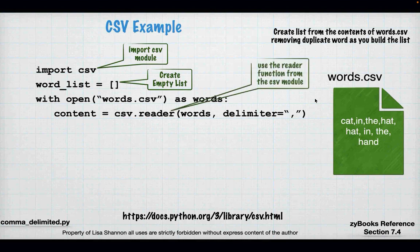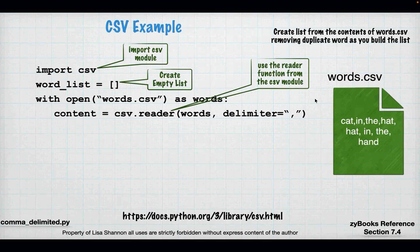And then I've got my with open. So I'm going to open my words.csv file as words. And then I'm going to say content equals csv.reader(words, delimiter=comma). Content is just a variable — I know it's a variable because it's on the left-hand side of a single equal sign. On the right-hand side, csv is the name of the module, reader is the function. And what the reader does is it takes words and applies the delimiter comma — so it takes my file descriptor and says my delimiter is a comma, so that's how I'm going to be separating things. Could have been a space, could have been a pipe, could have been the letter Q — doesn't matter. It's just the delimiter.